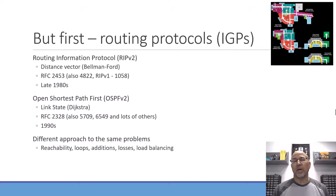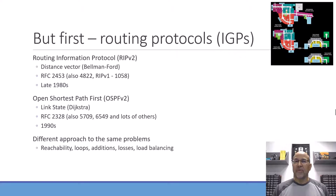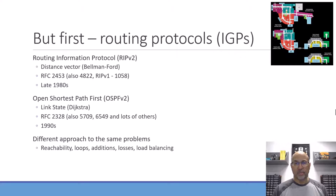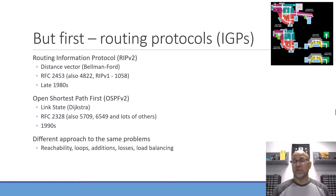For the internet we use exterior routing protocols like BGP. Our training wheels protocol, the one we use a lot to get started on, is RIP or the Routing Information Protocol. Currently we're using RIP version 2. RIP is what we call a distance vector protocol based on the Bellman-Ford algorithm and standardized in RFC 2453. Distance vector means I know a network I want to get to, here's my next hop, and here's how far away it is using a metric.